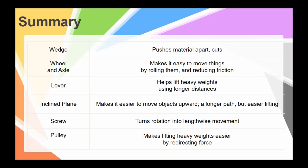What are the six simple machines and how do they make work, quote unquote, easier? So the wedge pushes materials apart, or cuts. So you're applying a vertical force by putting it at a small point and using the bigger back portion of the wedge to push the two parts apart. The wheel and axle makes it easy to move things by rolling them. This reduces friction.